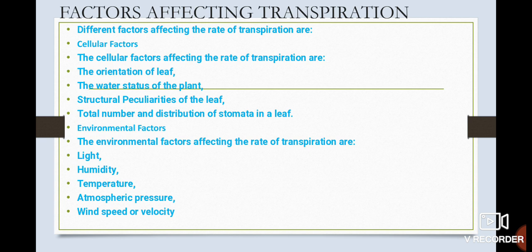Other cellular factors include the water status of the plant — whether the plant can absorb water adequately, and whether the vascular system is well developed. Structural peculiarities of the leaf also matter, along with the total number and distribution of stomata per leaf. Environmental factors affecting transpiration include light, humidity, temperature, atmospheric pressure, and wind speed or velocity.